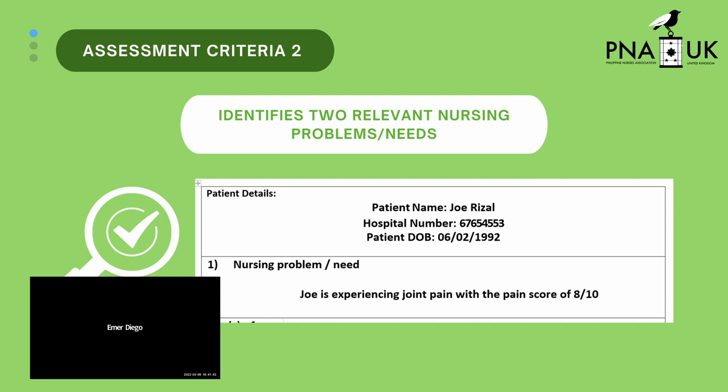The example on screen shows Joe is experiencing joint pain with a pain score of eight out of ten. We learned in university that the bible of planning is NANDA — the North American Nursing Diagnosis Association. However, we are in the UK, so we are not using NANDA. You can simply identify the problem as shown on screen: Joe experiencing joint pain with a pain score of eight out of ten.